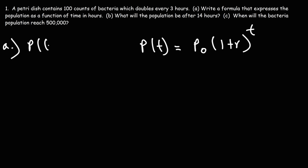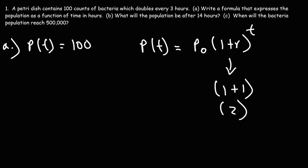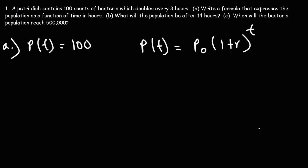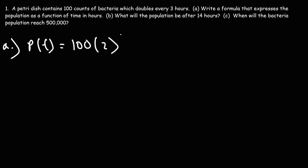For part A, p(t) equals the initial amount p₀, which is 100. Notice that it doubles every 3 hours. When something doubles, that means the growth rate is 100%. So if r is 100%, as a decimal that's 1, meaning the growth factor is 2. It just doesn't double every hour — it doubles every 3 hours. So we have a growth factor of 2, and it will be t over 3.